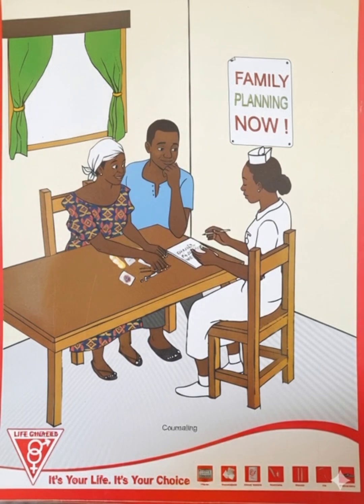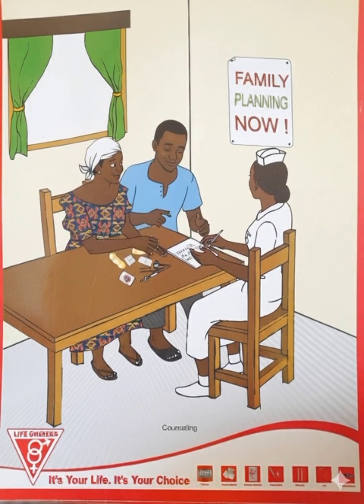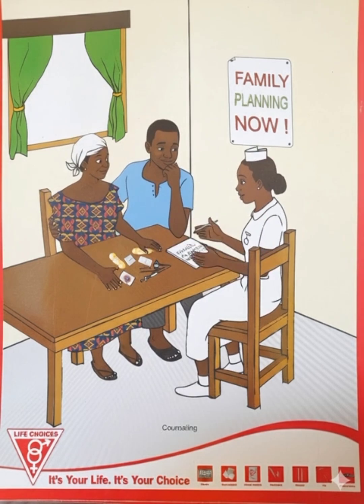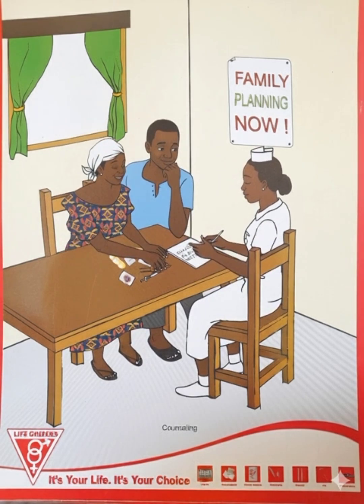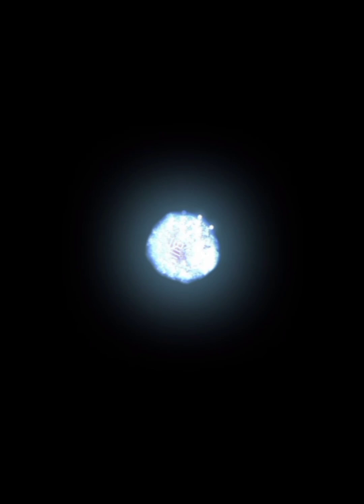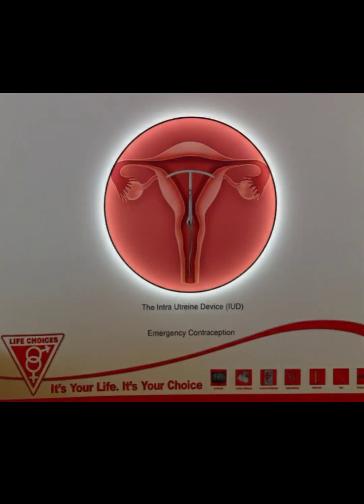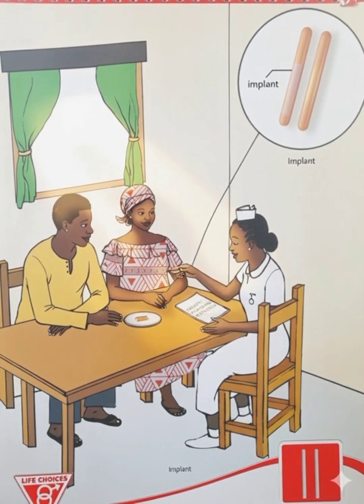Now let's explore some of the methods you might discuss and their specific mechanism of action. Long-acting reversible methods, or LARCs: the IUD is a small, T-shaped device inserted into the uterus. Its mechanism of action is primarily to prevent fertilization. The copper IUD creates a toxic environment for sperm, while the hormonal IUD also thickens cervical mucus and thins the uterine lining.